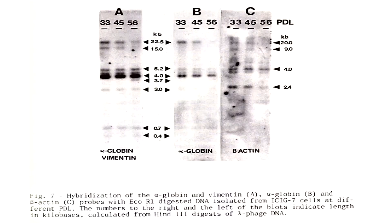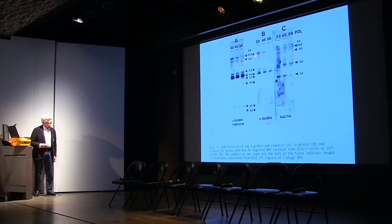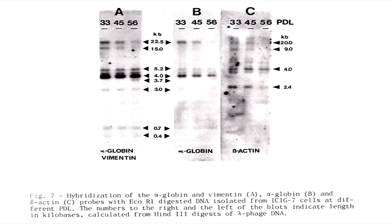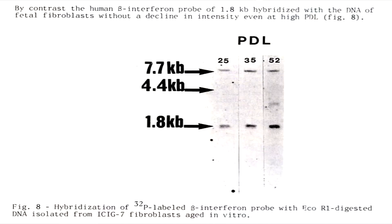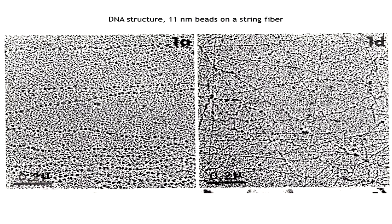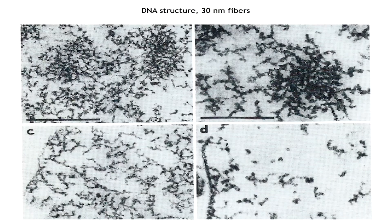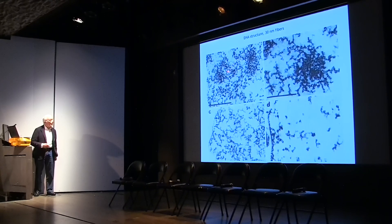First, at the gene level, we measured the hybridization signal for the alpha-globin and vimentin gene, and for the beta-actin gene, and there is an attenuation of the hybridization signal for these genes. Not all regions are so unstable though — for instance, the interferon gene does not change through the age of the cells. There are also changes in the structure of the 11 nanometer beads-on-a-string fiber in young cells versus old cells, as well as changes in the 13 nanometer fiber structure, in both the nucleolus region and the nucleoplasm.